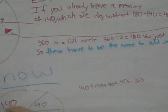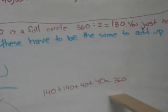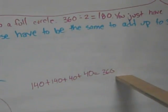So now is 140, 140, 40, and 40. These all add up to 360. 360 is a full circle.